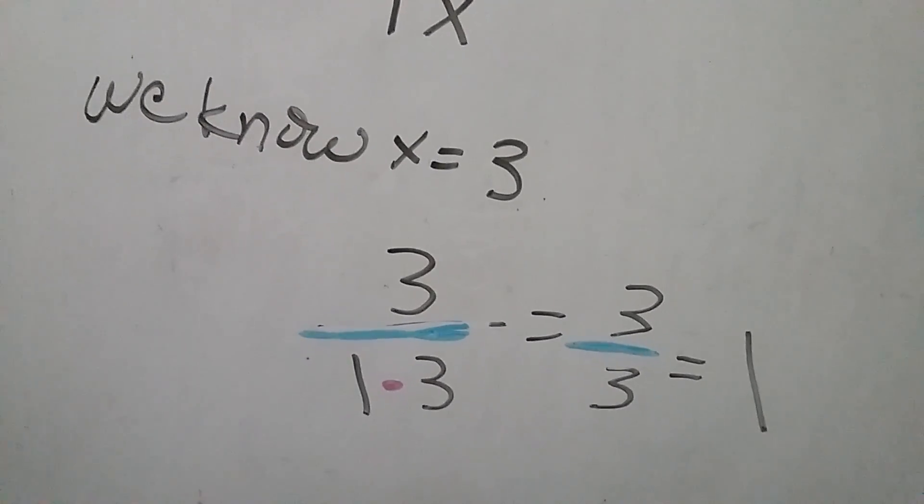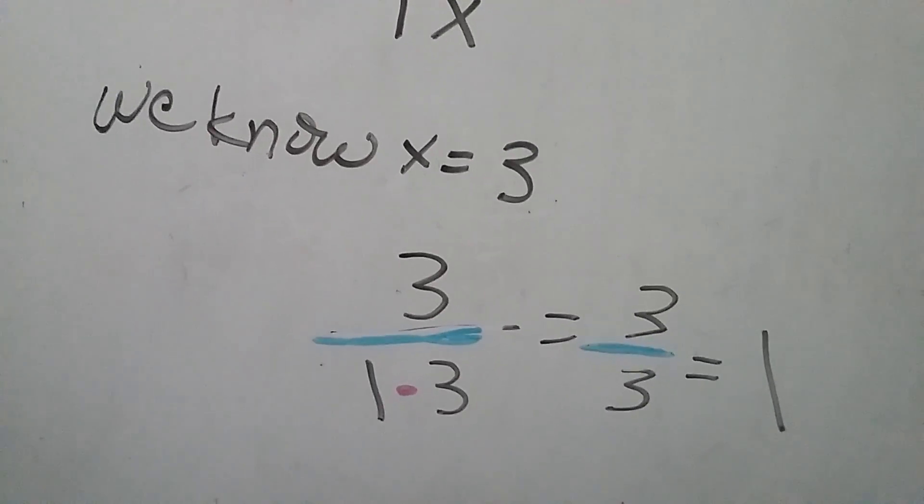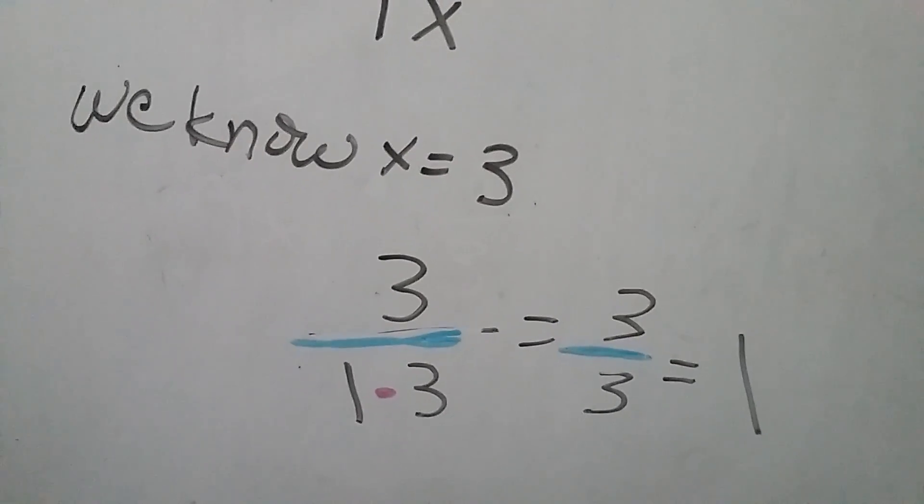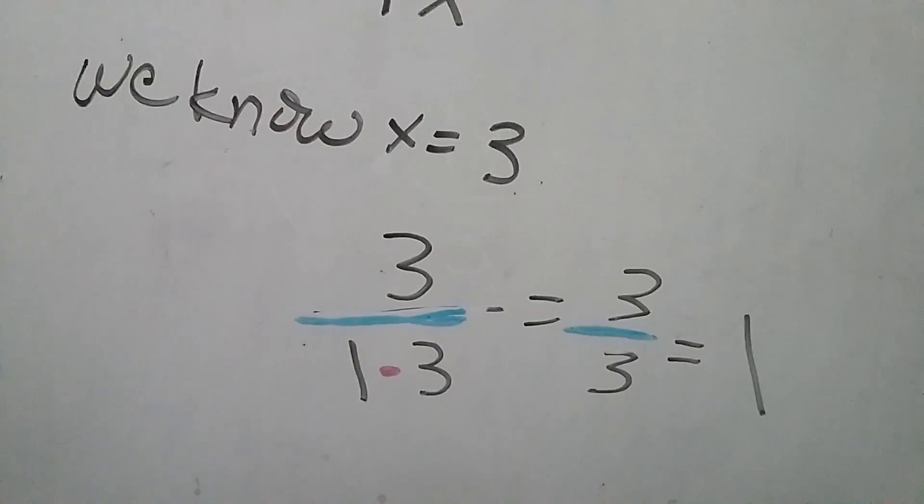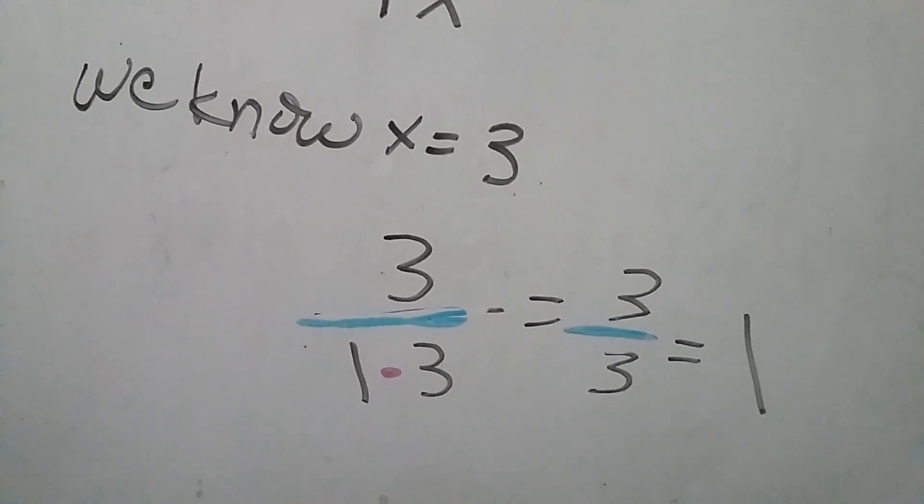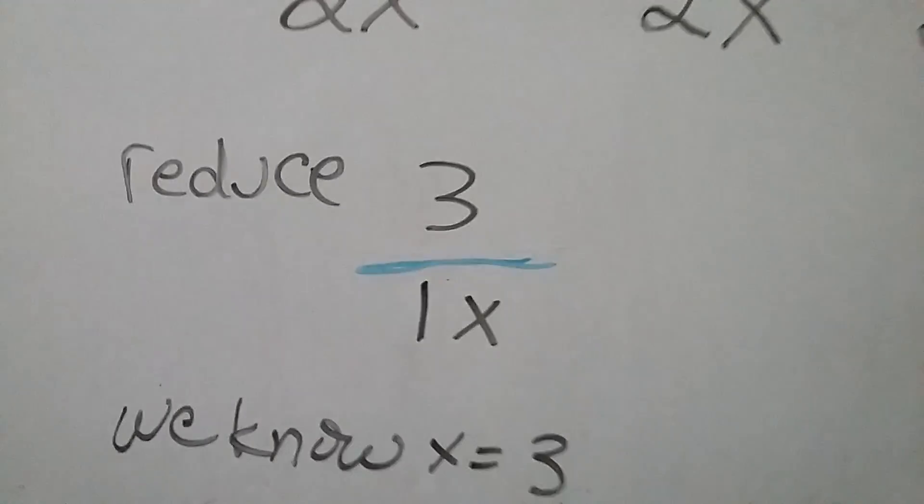1 times 3 is 3, which equals 3 thirds, which equals 1. And also 3 divided by 3 equals 1. But 3 thirds we also know is equivalent to 1. So now we have solved the whole problem because we reduced our problem down to this.